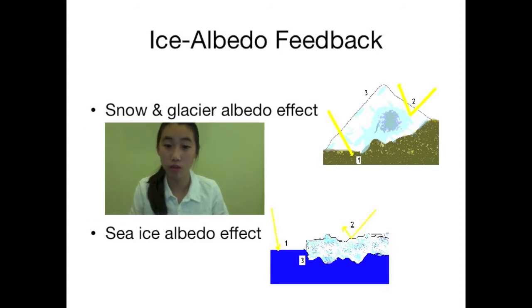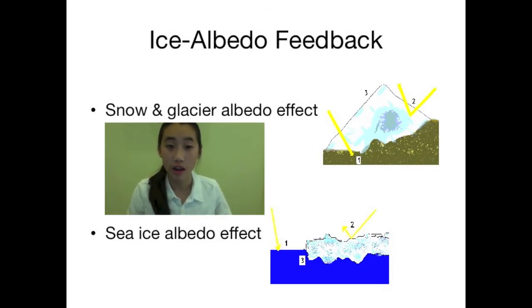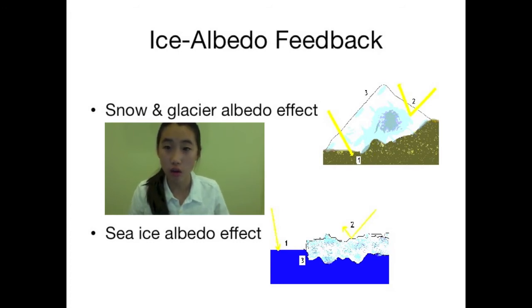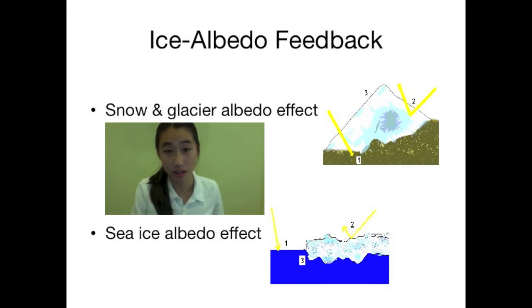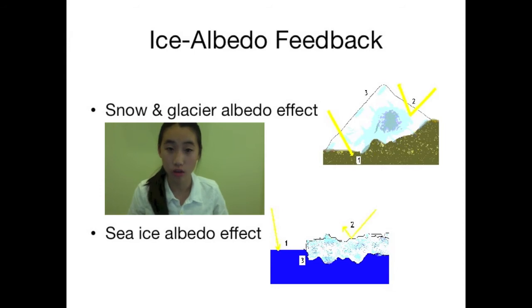The difference between the snow and glacier albedo effect and the sea ice albedo effect is that snow and glaciers are above land, so when they melt, land is exposed. But for sea ice, when the sea ice melts, ocean water is exposed.